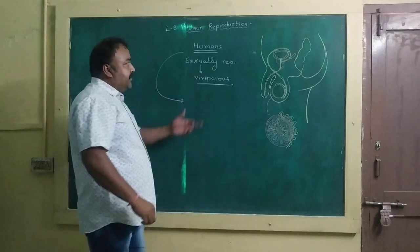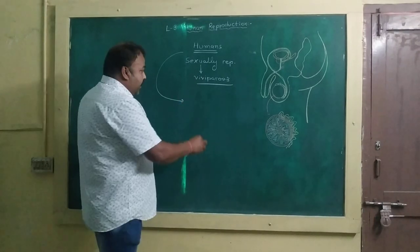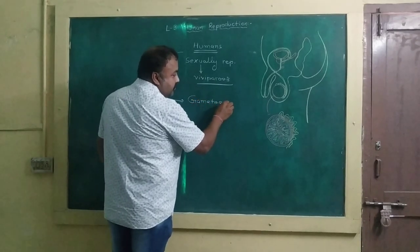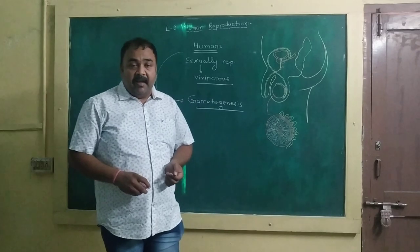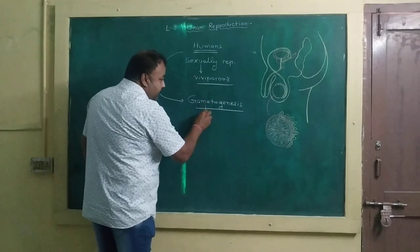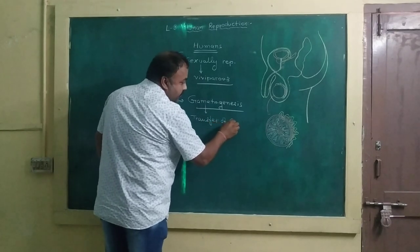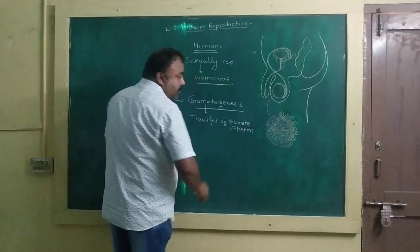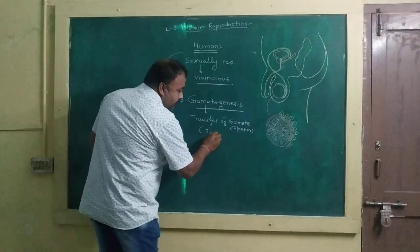Sexual reproduction in humans includes various processes. First is gametogenesis, that is the formation of gametes — sperms in males and ova in females. Then transfer of gametes, that is the release of sperm into the female reproductive tract, which is known as insemination.